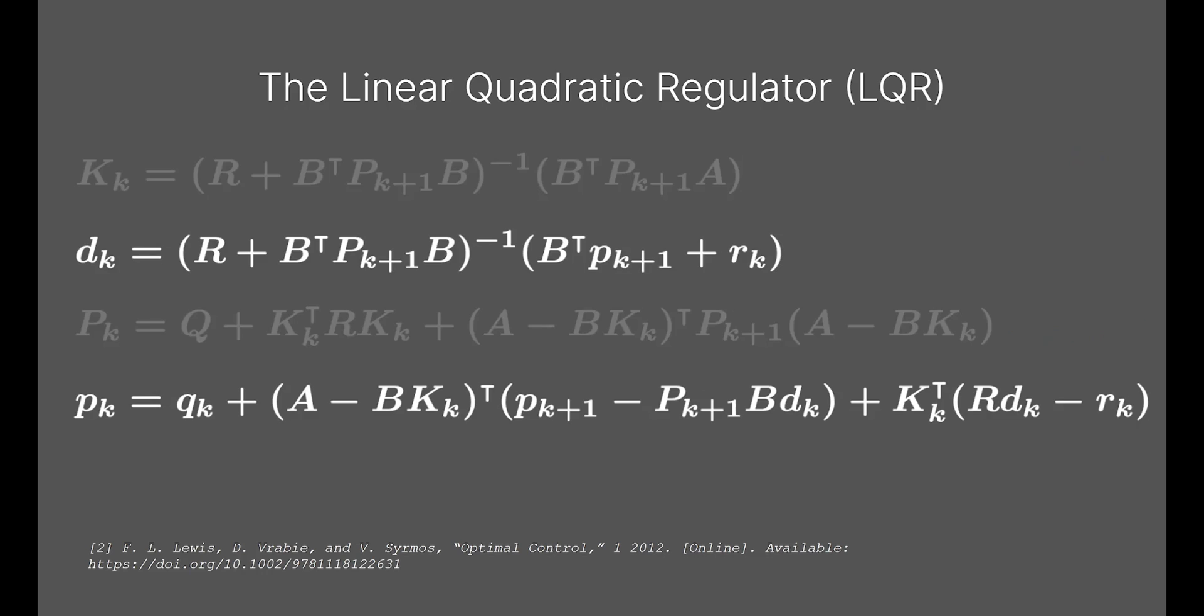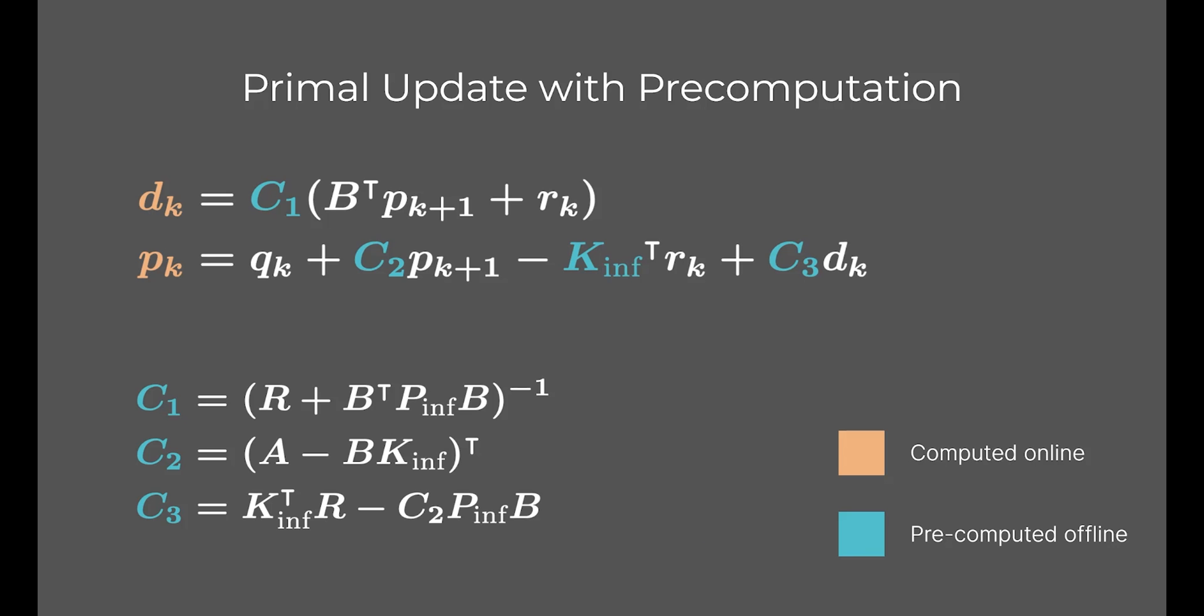Only the linear terms of the Riccati equation need to be updated as part of each ADMM iteration, and because we already calculated P and K, we can also precompute the matrix inverse and other matrix coefficients. The result is an algorithm whose most expensive operations are matrix vector products, allowing TinyMPC to achieve a low memory footprint while performing fast online computations.